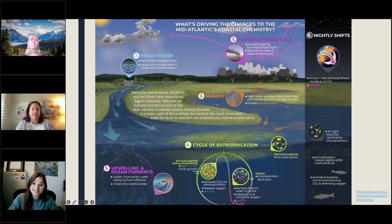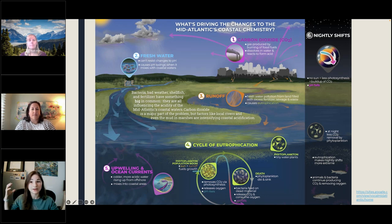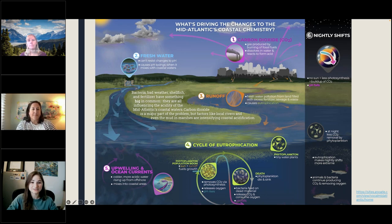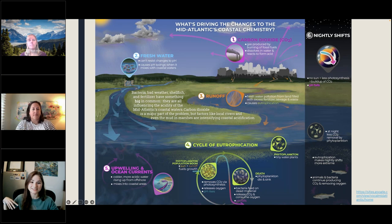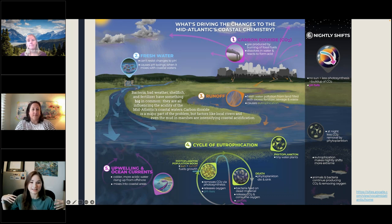In addition to all that, we have extensive background information for teachers so they can feel confident in what they are teaching. This goes over a great deal more than what we actually include in the curriculum, so teachers can pick and choose how they want to incorporate information covering everything from carbon cycles to pH scales, how oceans are acidifying, the science of coastal acidification, and more. We use infographics to show and explain the differences between coastal acidification and ocean acidification. The module does a good job explaining in layman's terms all the science that's happening so that any teacher can feel confident in the content.